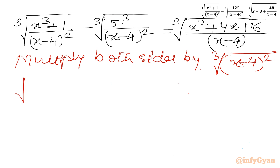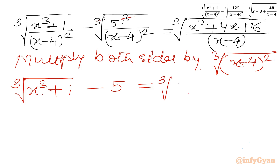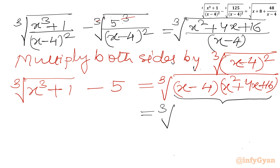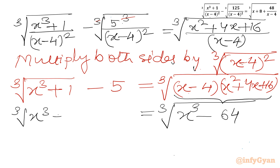After multiplying, we will have cube root of x³ plus 1, minus 5, equal to cube root of x² + 4x + 16 times cube root of (x minus 4). Now the RHS is one identity — it is the x³ minus 4³ formula. So I can write RHS as cube root of x³ minus 4³, which gives cube root of x³ minus 64.